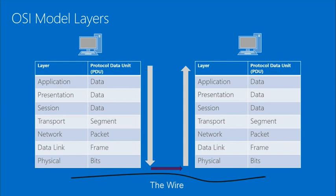The OSI model layers allow devices to intercommunicate. One device on the left needs to communicate with another. As data moves through the layers, the data unit changes name — data, then segment, packet, frame, and at the physical layer it becomes bits. It goes across the wire and gets reconstructed on the other side — deconstructed going down, reconstructed going up.